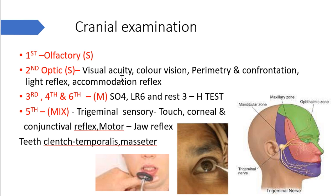Second is the optic nerve, also a sensory nerve. For the performance, visual acuity is tested using the Snellen chart, and color vision using the Ishihara chart. Perimetry tests the visual field, and the confrontation test is performed when a perimeter is not available — we compare our own field of vision with the subject's. Light reflex and accommodation reflex are also tested and have been discussed in the reflex video.